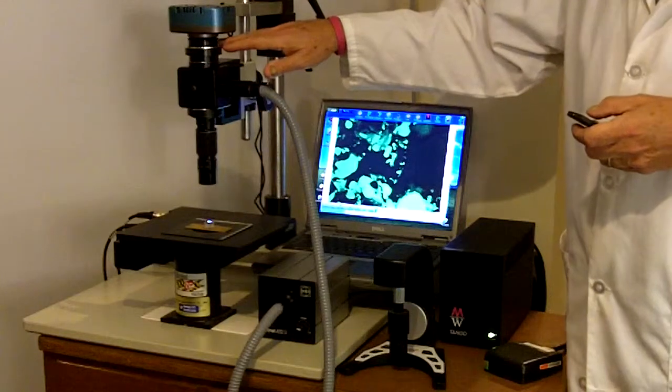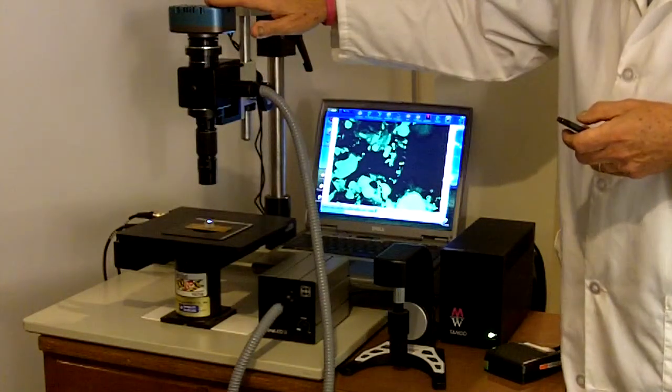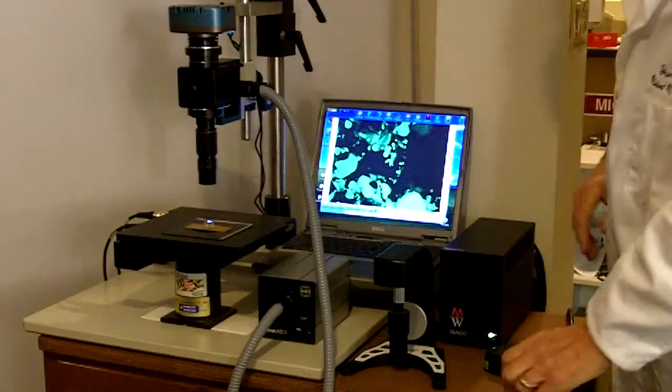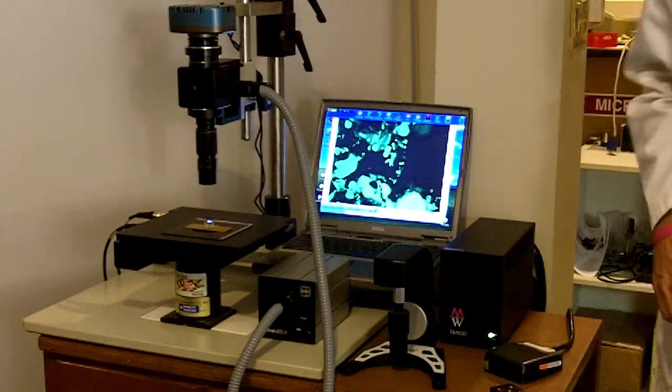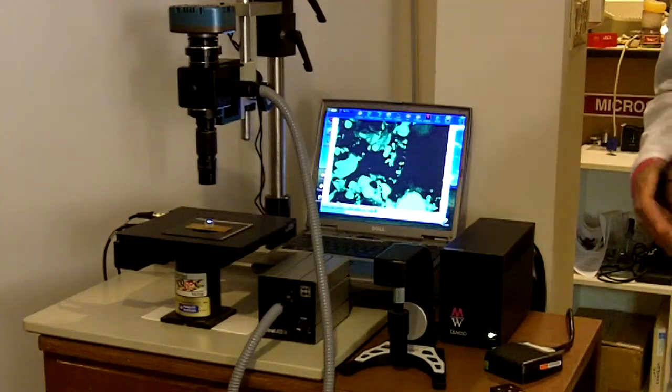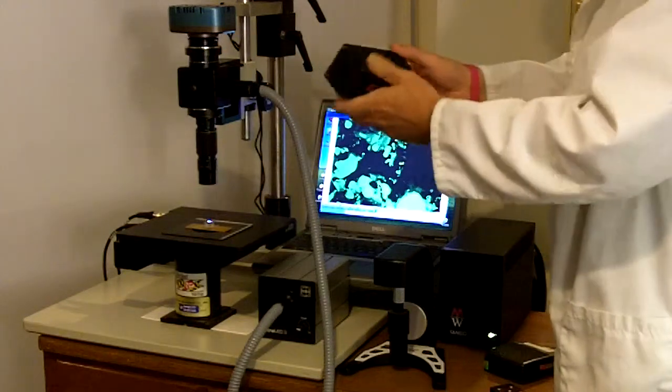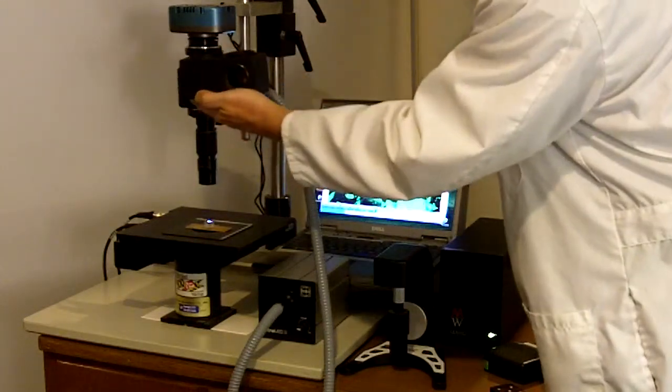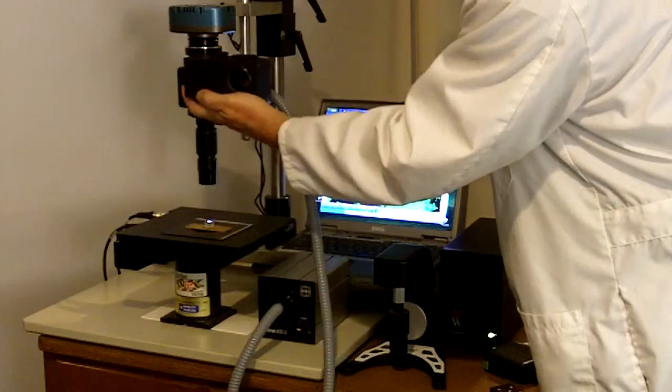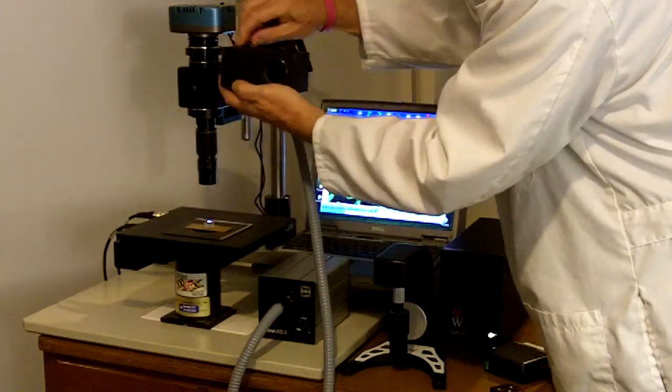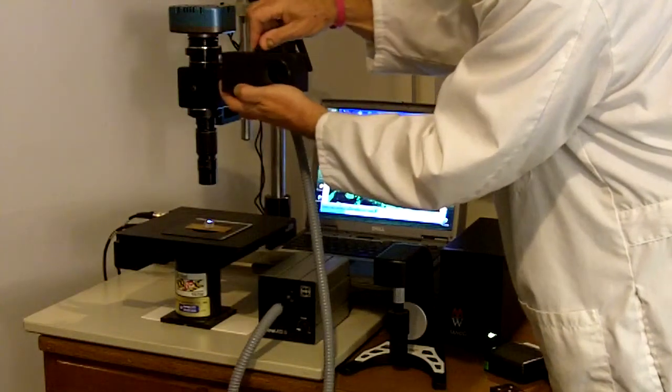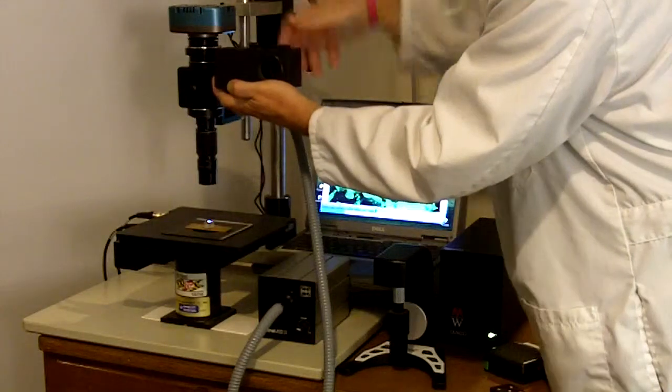In this case we've got a Peltier cooled digital C-mount camera, but on top of the C-mount module we can unscrew this and connect a dual port beam splitter. So this dual port beam splitter with a quick mirror release allows us to attach two cameras simultaneously.